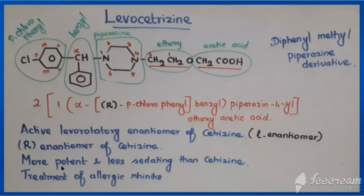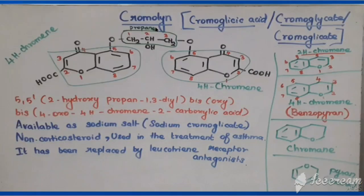Levocetirizine is more potent and less sedating than cetirizine. It is used in the treatment of allergic rhinitis. The next drug is cromolyn, available as a sodium salt — that is why it is called cromolyn sodium.